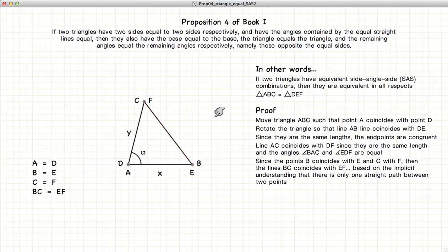Now this is based on an assumption from Euclid that he didn't explicitly state, which is if you have two points, C and B, that there is only one path a straight line can take between them. So if C and F, E and B are the same, then any straight line that passes between those two points must also be the same as any other line that passes between those two points.